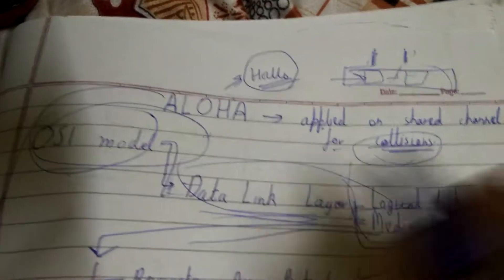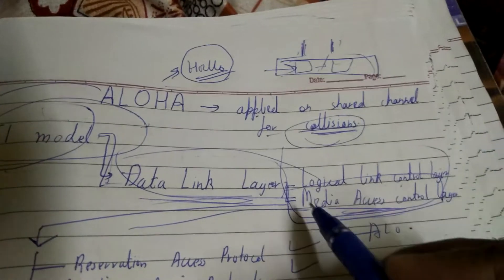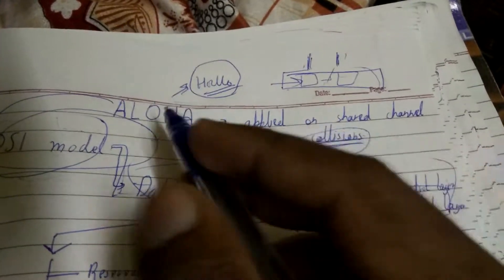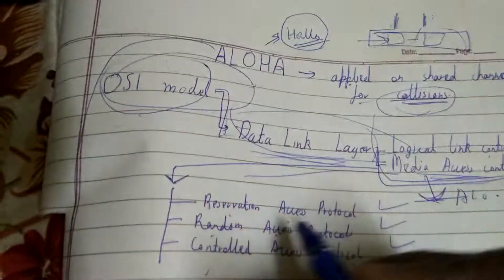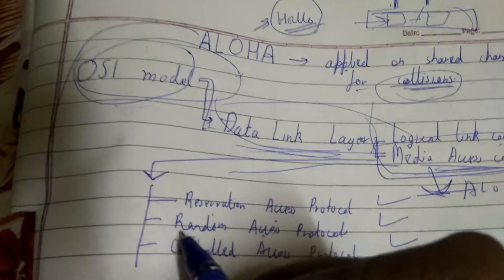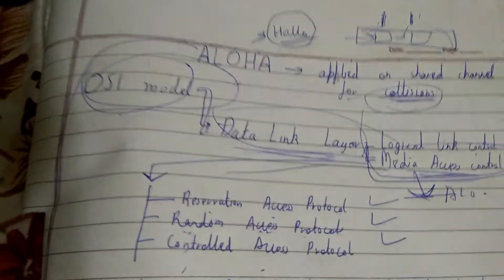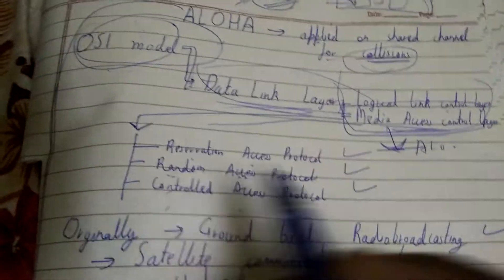ALOHA is contained within the OSI model. Inside the OSI model, the data link layer exists, which is further divided into two layers: the logical link control layer and the media access control layer. ALOHA is part of the media access control layer, which is further divided into three protocols: reservation access protocol, random access protocol, and control access protocol.